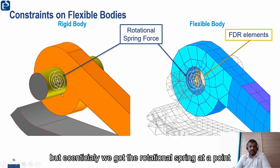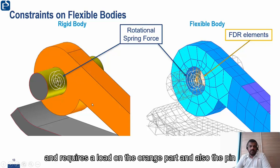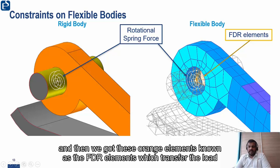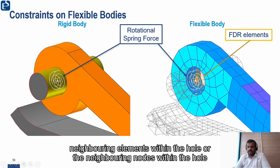Essentially we've got the rotational spring defined at a point, and it applies a load on both the orange part and also the pin. On the right we've still got the rotational spring, but now it applies the load to a central node, or a master node. And then we've got these orange elements, known as the FDR elements, which transfer the load to the neighbouring elements — or the neighbouring nodes — within the hole. So the force is essentially distributed among those nodes.